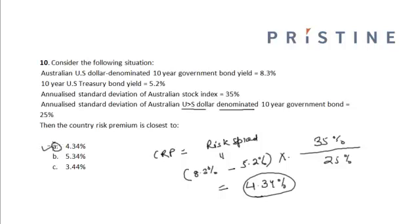The risk spread is equal to the value of the government bond denominated in US dollars for a country minus the bond issued by the US Treasury of the same maturity. So the risk spread equals 8.3% minus 5.2%, multiplied by the ratio of the annualized standard deviation of the Australian stock index divided by the annualized standard deviation of the Australian 10-year government bond denominated in US dollars. The answer is 4.35%.